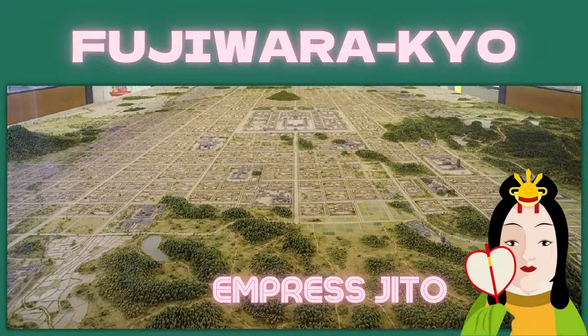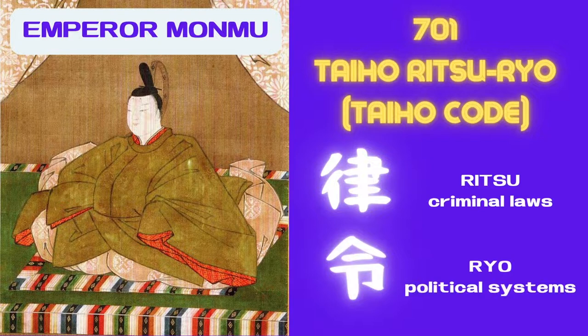After the abdication of Empress Jito to his grandson, Emperor Monmu, the Taiho Ritsuryo, or the Taiho Code, was enacted in 701, modeled after the Code of the Tang Dynasty, and a centralized state where the emperor at its center was finally established.